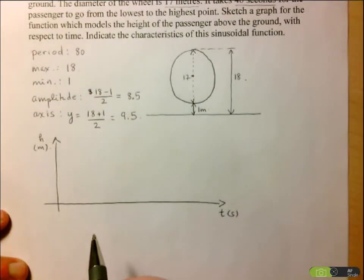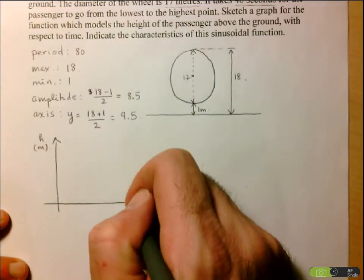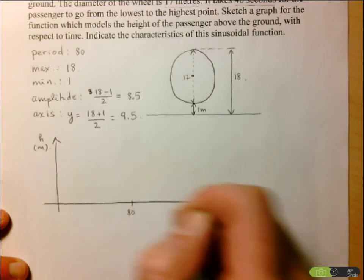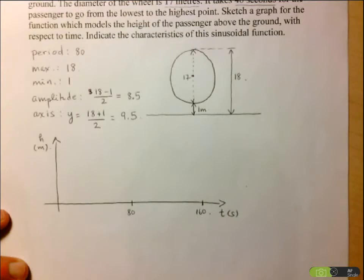So I want to draw two periods. So I'm going to split this up into one period of 80 seconds, and then another period, another 80 seconds, so 160 in total.